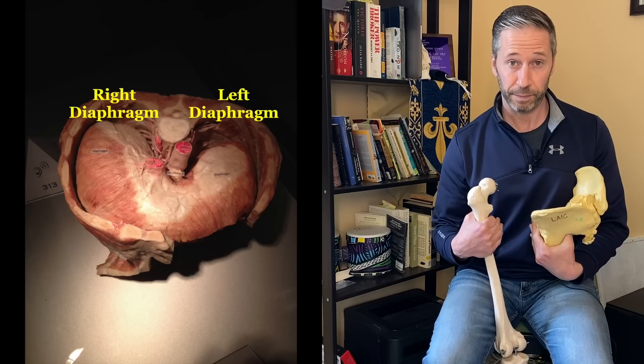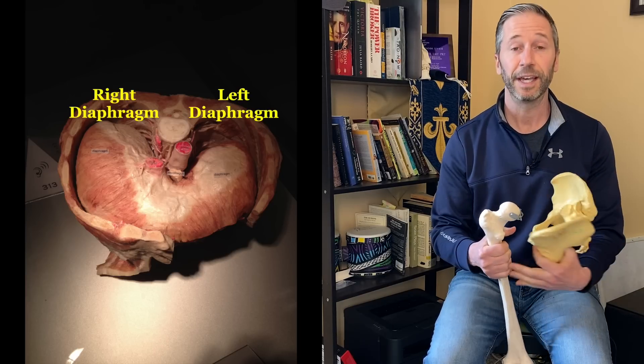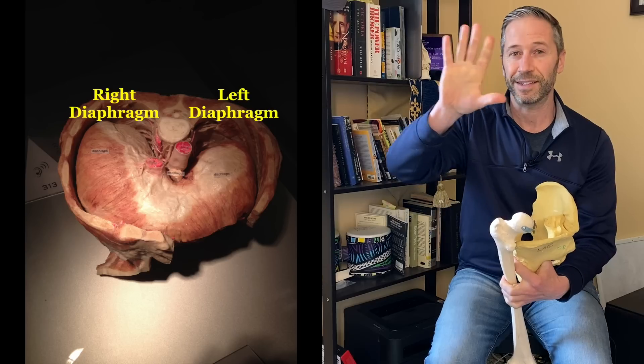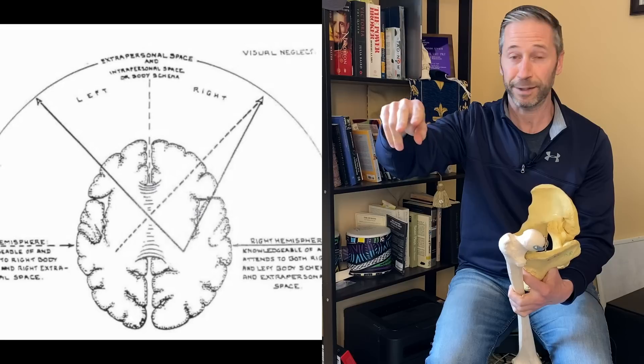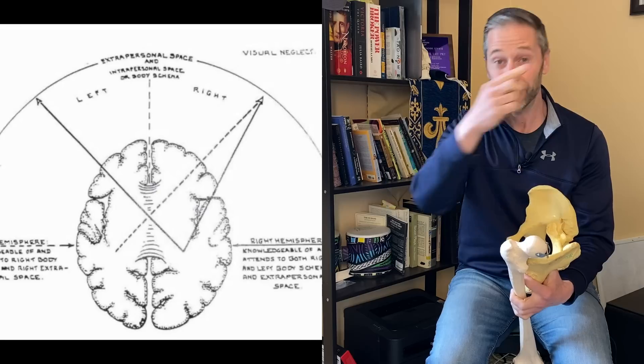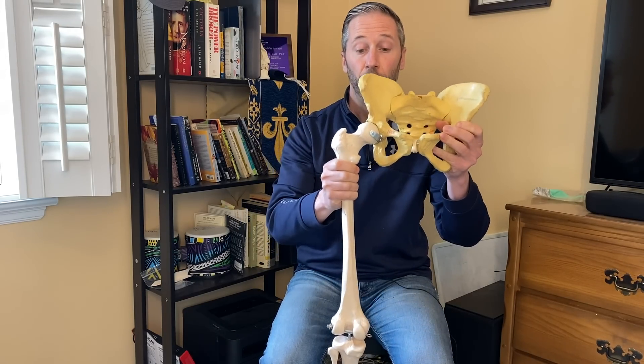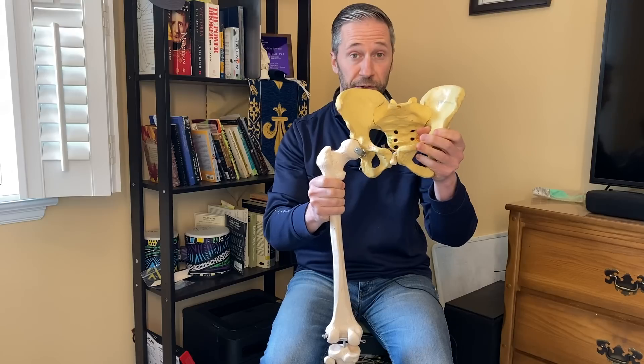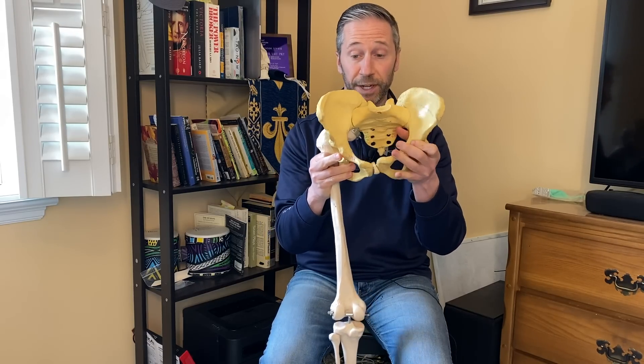Because of the bigger right diaphragm, and because of how our brain processes sensory input, particularly our peripheral vision on the right side — it preferentially processes right peripheral vision compared to the left — our bodies like to orient themselves over to the right side. So our pelvis turns to the right, the left side comes forward, the right side comes back a little bit. That's the left AIC pattern.